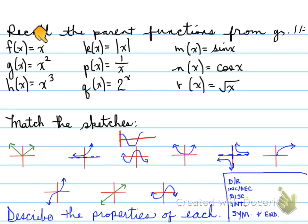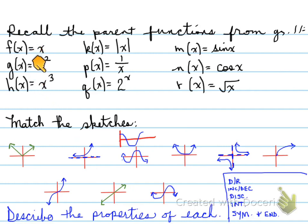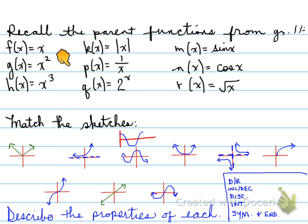So let's go through each of them. The linear function hopefully is pretty easy — you know that represents this one right here. The next one, x squared, is the parabola — this sketch matches the parabola. The next one is the cubic function, which looks like this. Then we have the absolute function, which we saw in section 1.2. We have the reciprocal function, which is this one here, which has, funny enough, two asymptotes.